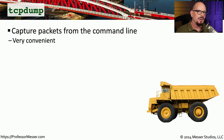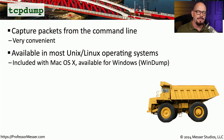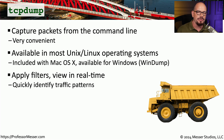In earlier videos, we talked about capturing packets on the network to view information and troubleshoot issues. One way to do this is using a third-party utility such as Wireshark, but many operating systems include this capability natively. A utility that allows you to capture packets from the command line is tcpdump. It lets you capture packets and either view them on screen or save them to a file. tcpdump is usually included with Linux and macOS, and similar functionality is available in Windows via the WinDump utility. You can capture every packet or apply filters and view information in real time.